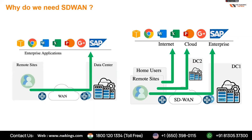In traditional networks, all remote site data came to the data center first, and then exited from there — whether for internet traffic, SaaS applications, or applications hosted in the data center. Everything passed through the data center before reaching its destination.